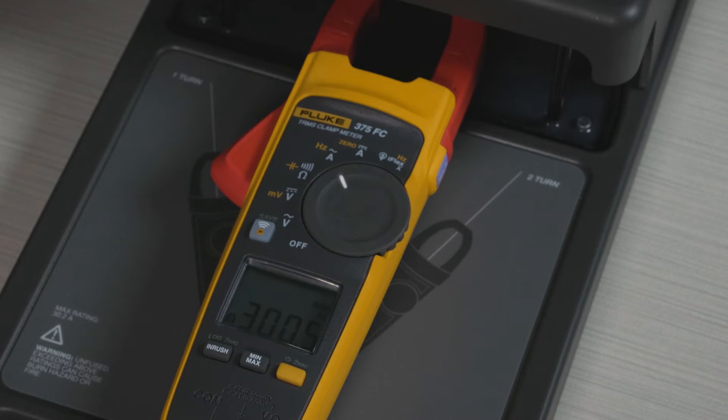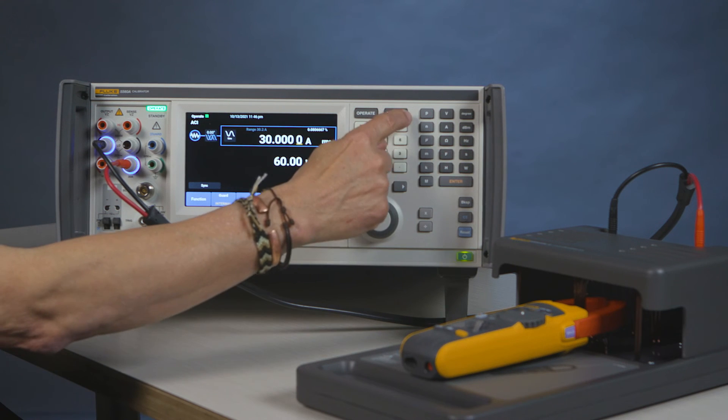And now you read 300 amps on your clamp meter. And that's how you calibrate a clamp meter.